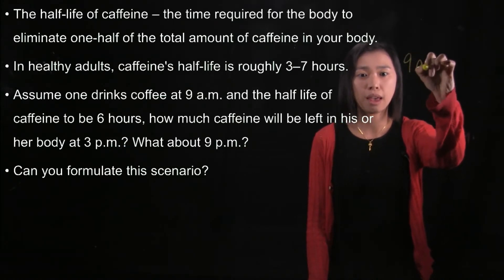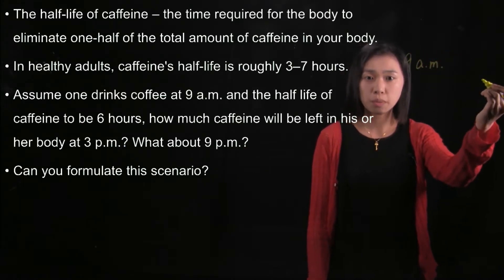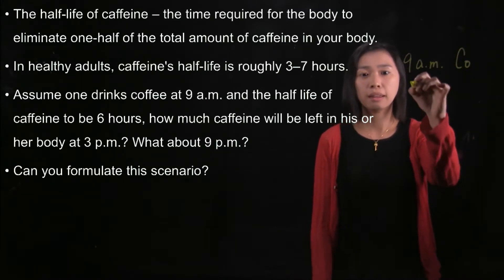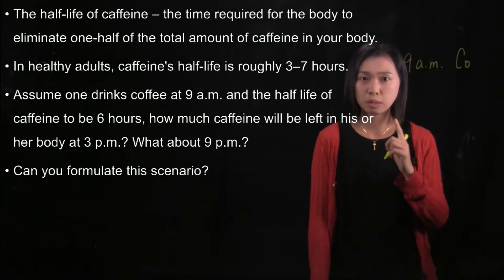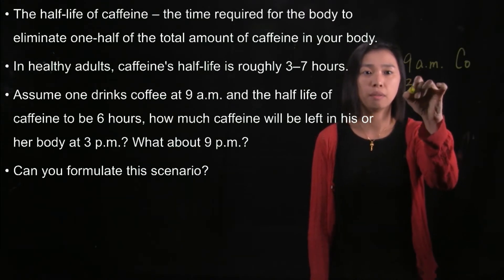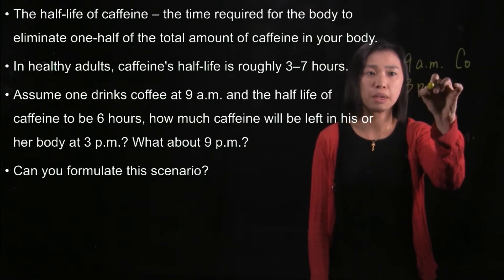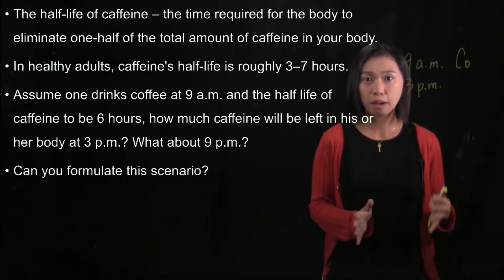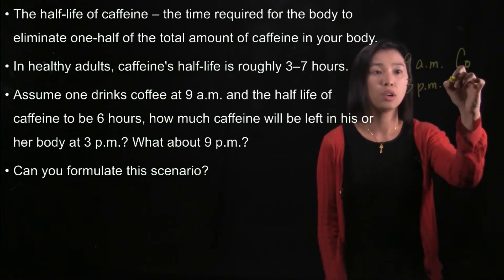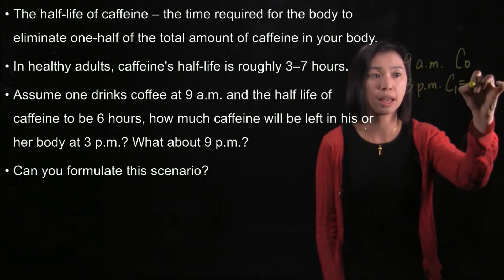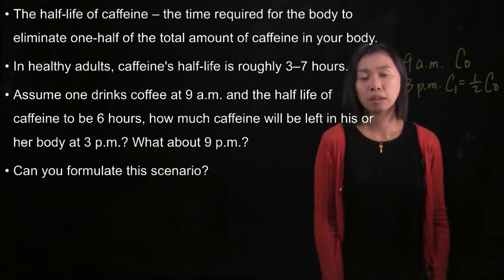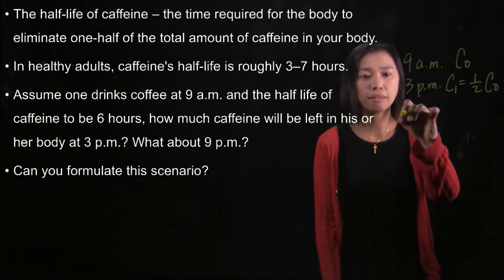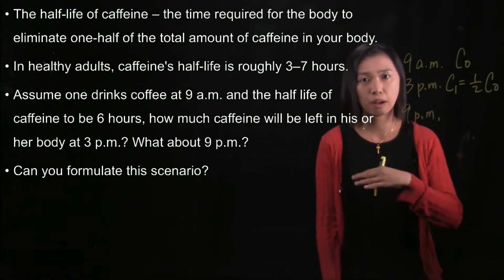At 9 a.m., we assume that there are C-not of caffeine in the body. After 6 hours, which means one half-life, which is 3 p.m., it would be half of the original amount. So we would have C-1, which is half of C-not, because one half-life has already passed. And then at 9 p.m., after another half-life, we will have C-2.